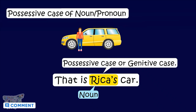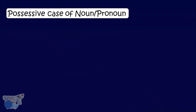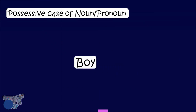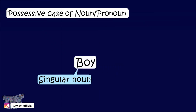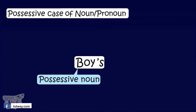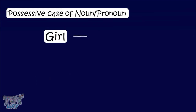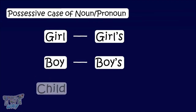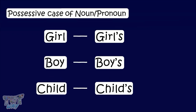Now let's learn how to make possessive cases of different nouns. If we have a singular noun, we add apostrophe-s after it to make it a possessive noun. For example: girl → girl's, boy → boy's, child → child's.